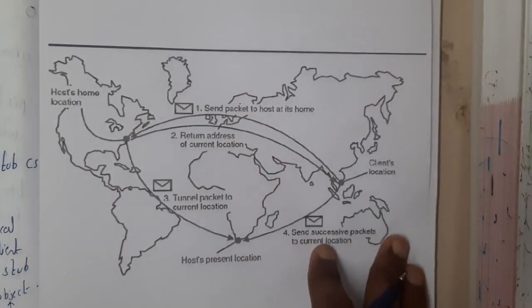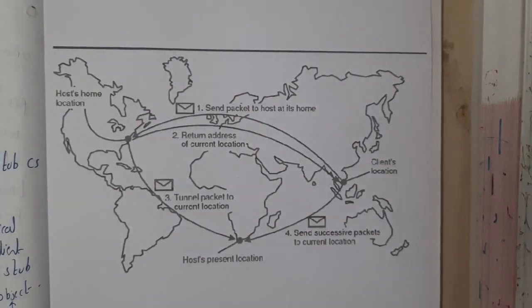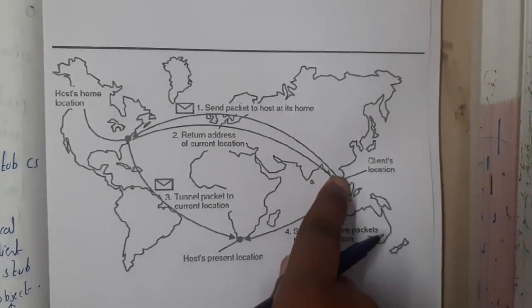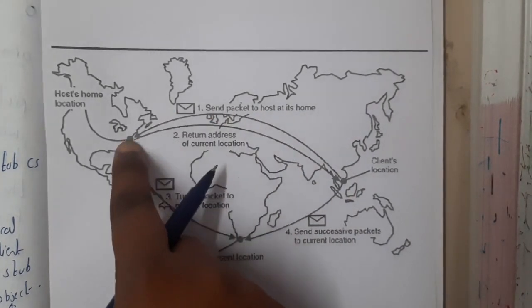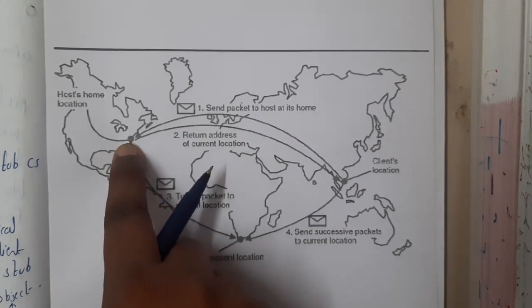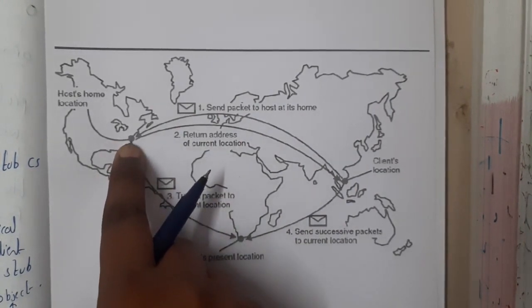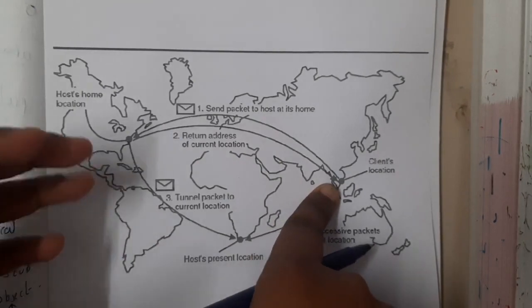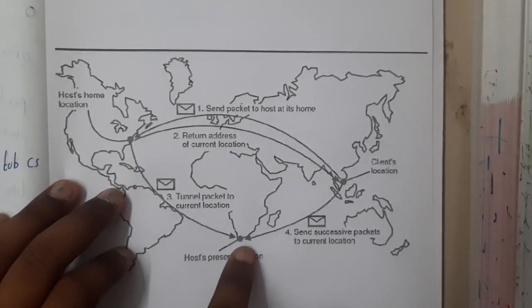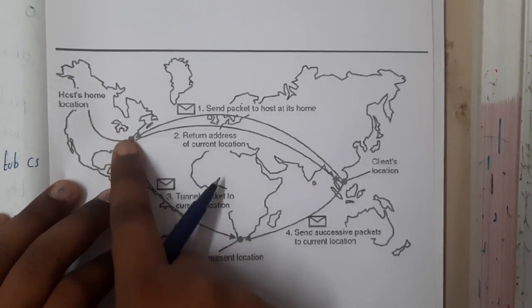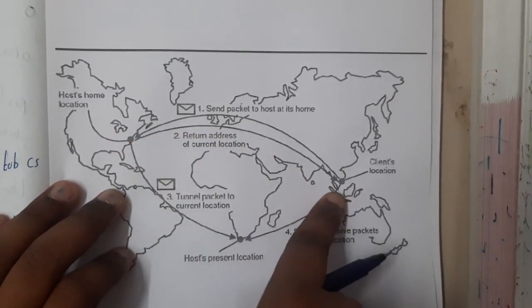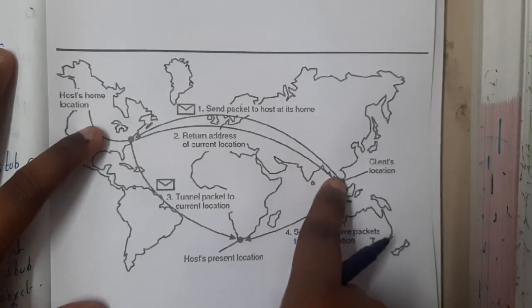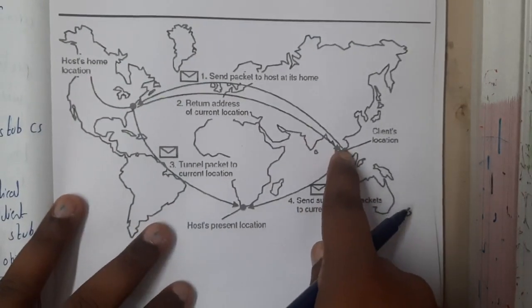The flow is like this — this diagram is from the textbook. This is the client location. The client will send a packet to the location where it wants to send data. If the user is there, they will accept it and communication continues. If the user's location has changed, the home location will inform the client of the current location by sending back the current address.